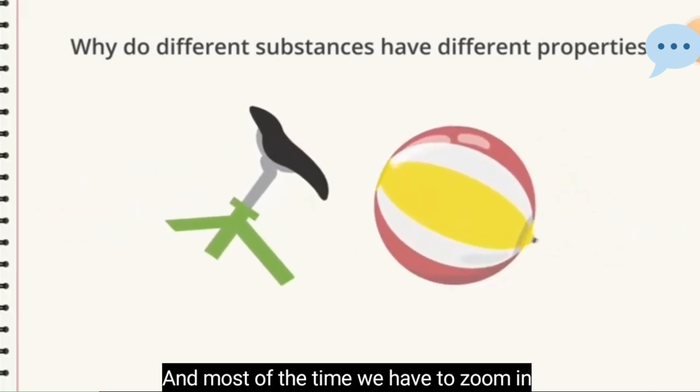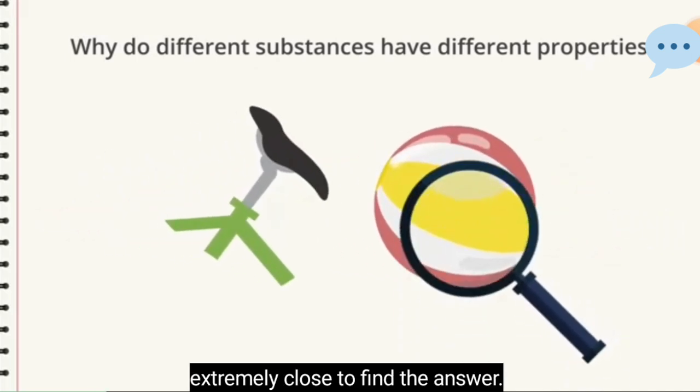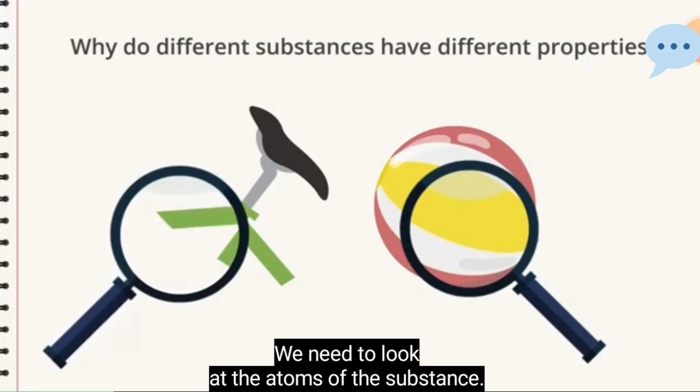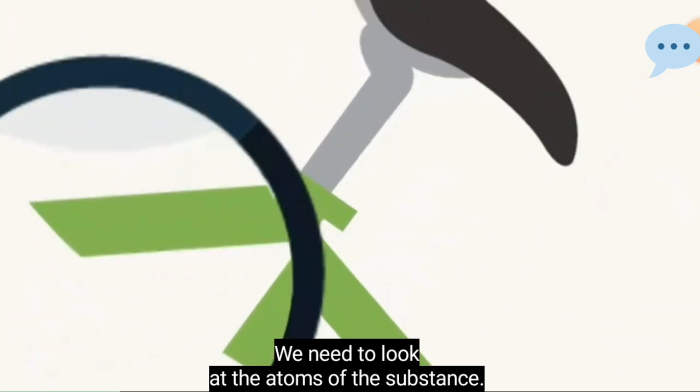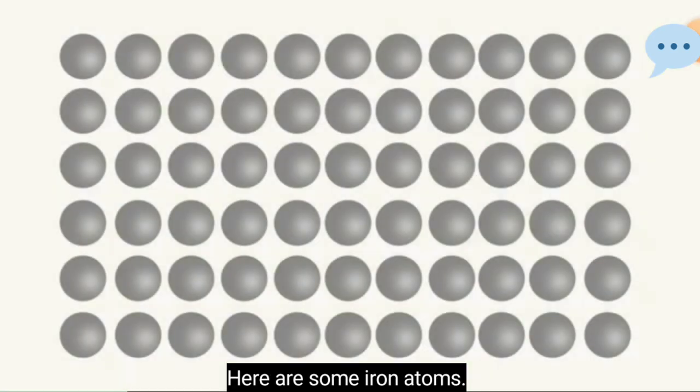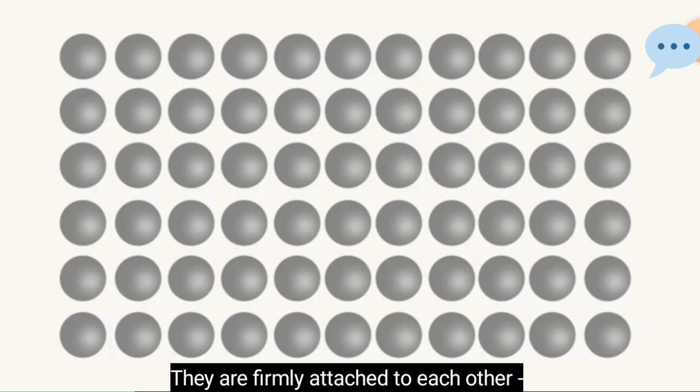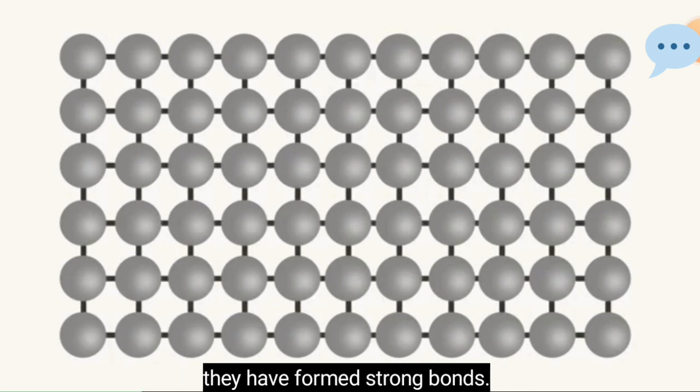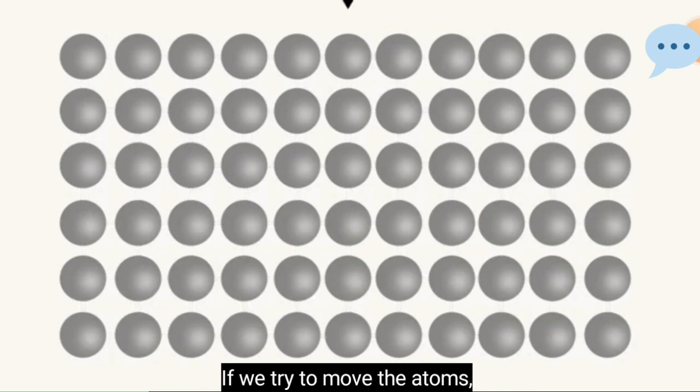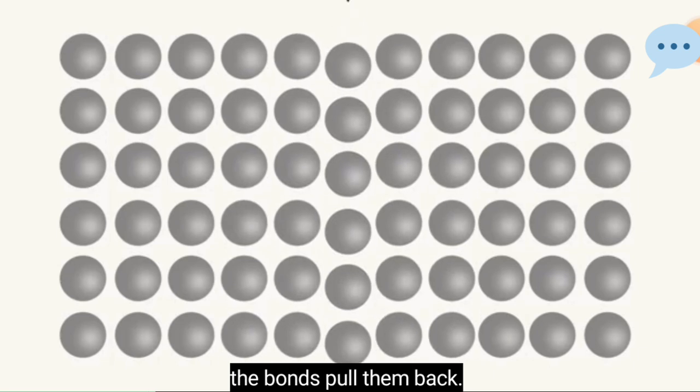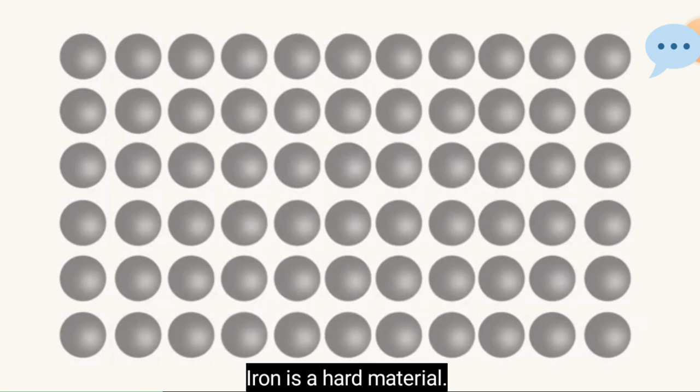Most of the time we have to zoom in extremely close to find the answer. We need to look at the atoms of the substance. Here are some iron atoms. They are firmly attached to each other. They have formed strong bonds. If we try to move the atoms, the bonds pull them back. Iron is a hard material.